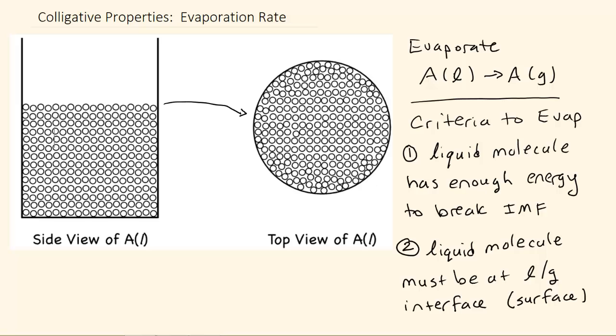First off, any molecule that wants to evaporate, or doesn't really want to, that can evaporate, must have enough energy to break the intermolecular forces holding it together, because that's what differentiates a liquid and a gas. So it's pretty simple to say that not all the molecules are going to have enough energy at a particular temperature because the energy is spread out in a Maxwell-Boltzmann distribution with some molecules having more and some molecules having less.